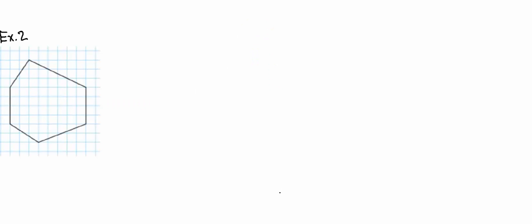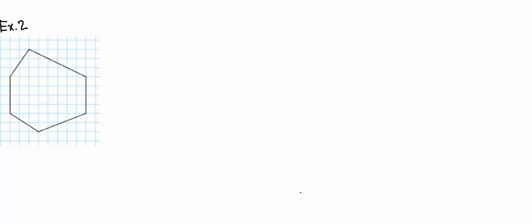Here we have example 2. In order to solve this one, we need to split this up into different shapes. So, here we have our rectangle in the center and our two triangles. We count the height for our rectangle, which is 4, and then our base, which is 8. So, now we know that our base is 8 and our height is 4.